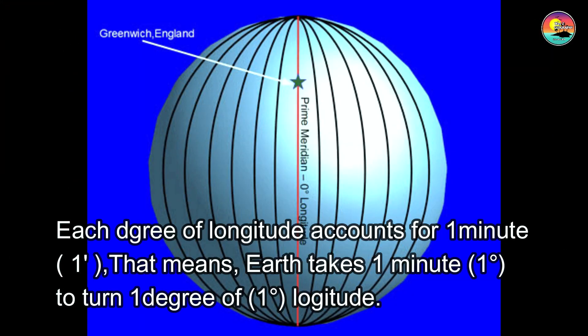This video is brought to you by Korn Spau. 1 meter means it takes 1 minute to cover 1 degree of longitude.